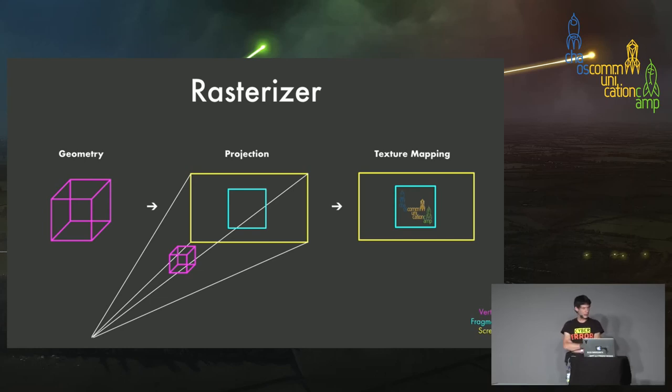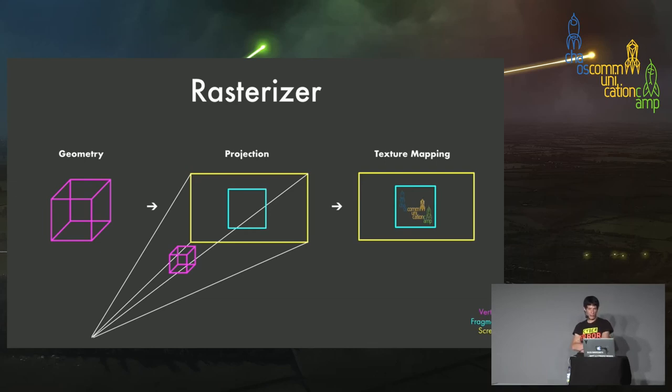The rasterizer takes all the geometry described in world coordinates in three-dimensional space and projects it onto a projection plane — a two-dimensional surface, which is basically your screen. After that we have two-dimensional fragments; the vertices are called fragments after they have been projected. These fragments then get mapped with textures or colors. So in three stages: describe geometry in 3D space, flatten it down onto a surface, and then for each triangle figure out how to color it. If a triangle has three colors, the rasterizer will interpolate the values so that every pixel has a desired color.